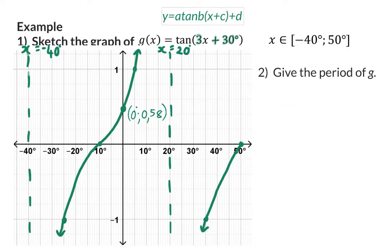Question 2: Give the period of graph G. Here we know that for the original tan graph the period is 180 degrees, and that should now be divided by the b value. So the final period for our graph is 60 degrees.